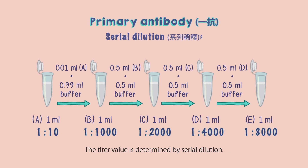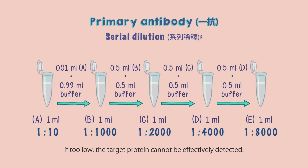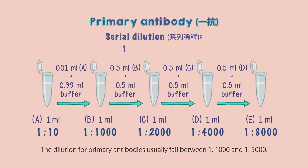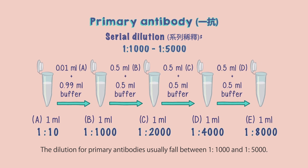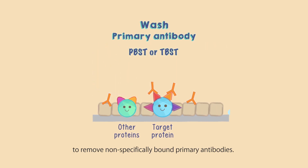The titer value is determined by serial dilution. If the concentration is too high, non-specific bindings will increase; if too low, the target protein cannot be effectively detected. The dilutions for primary antibodies usually fall between 1 to 1,000 and 1 to 5,000. The membrane is then washed with PBST or TBST several times to remove non-specifically bound primary antibodies.